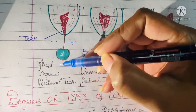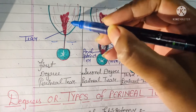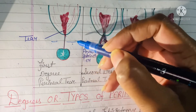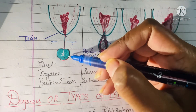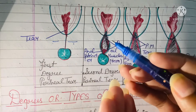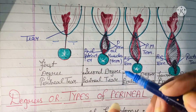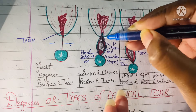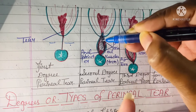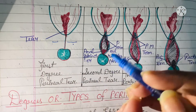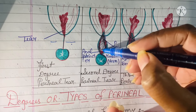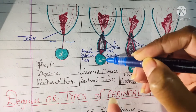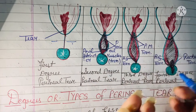In the first degree of perineal tear, the tear will be only on the vagina — there won't be any tear on the perineum or on the anus. In the second degree of perineal tear, there will be a tear on the vagina along with the perineal muscles, but there won't be any tear on the anal sphincter, and the anus will be safe.